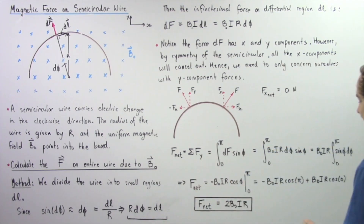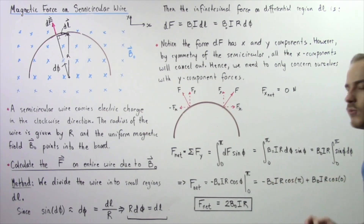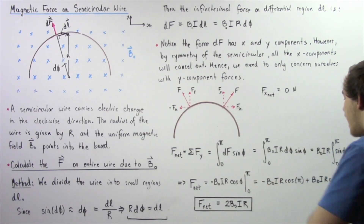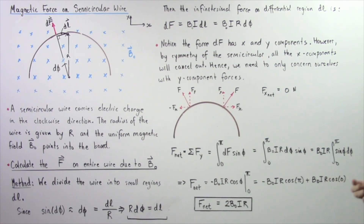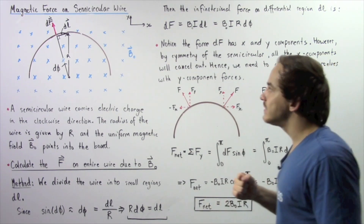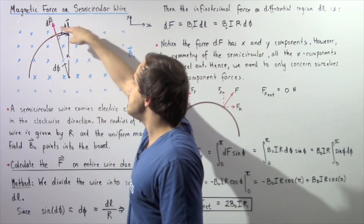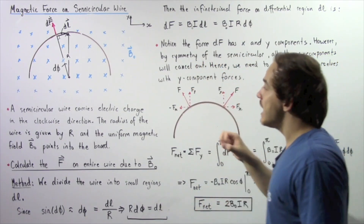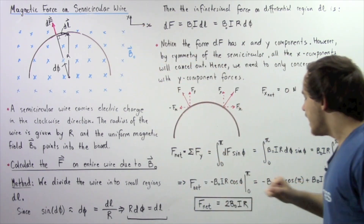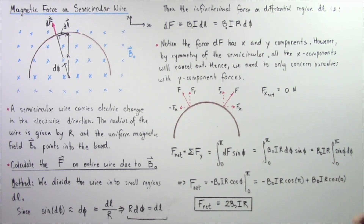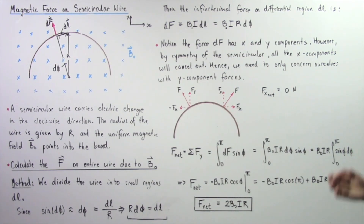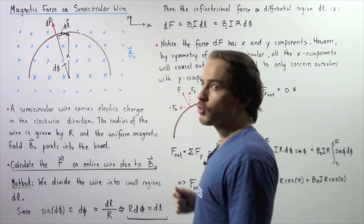Evaluating the integral: cos(π) = −1 and cos(0) = 1, so −[cos(π) − cos(0)] = −[−1 − 1] = 2. Therefore, the net force acting on the entire semicircular wire in the uniform magnetic field is F = 2·B0·I·R.